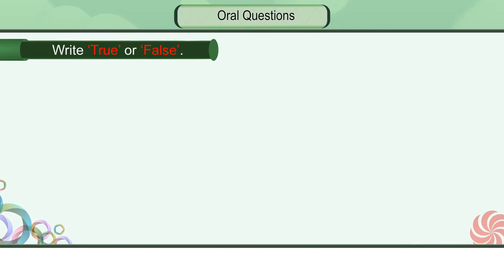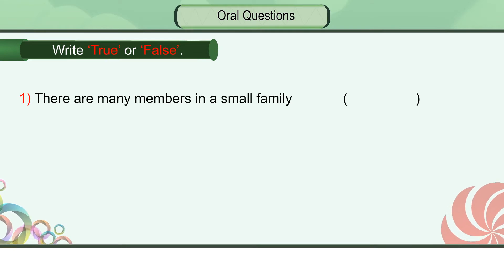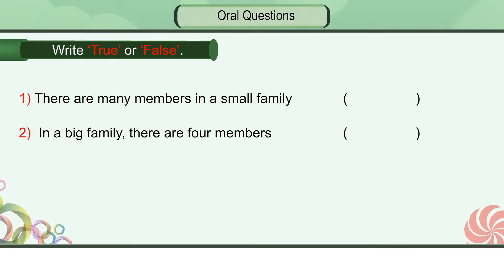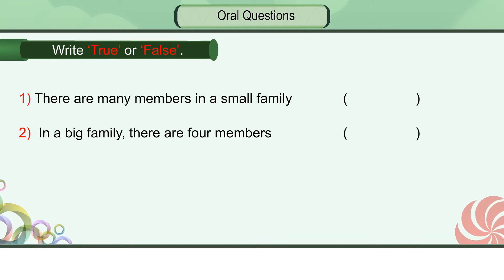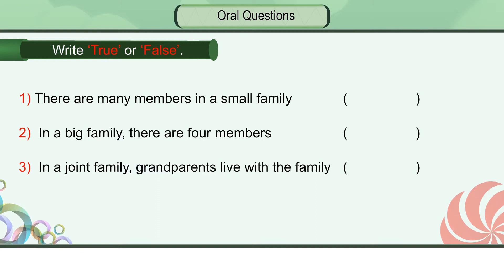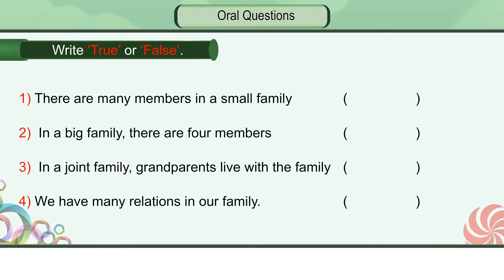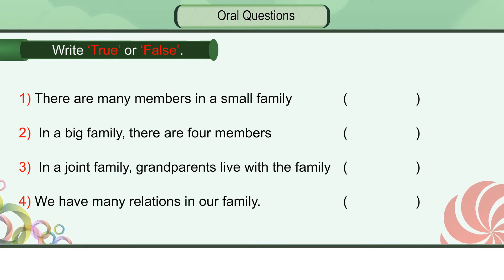Oral question. C. Write true or false. 1. There are many members in a small family. 2. In a big family, there are four members. 3. In a joint family, grandparents live with the family. 4. We have many relations in our family.